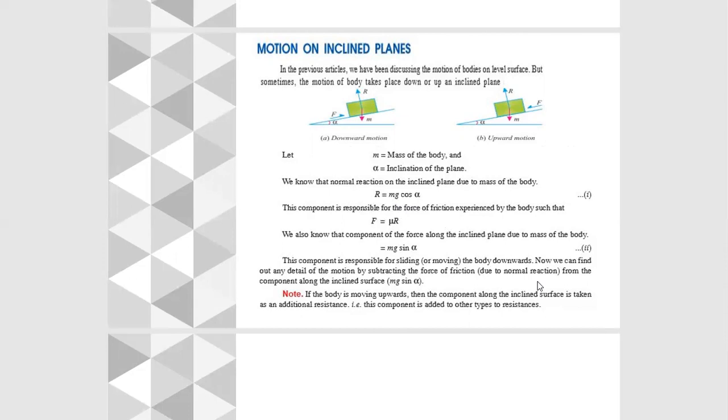Now we can find out any detail of motion by subtracting the force of friction due to normal reaction from the component along the inclined surface, which is mg sin α.